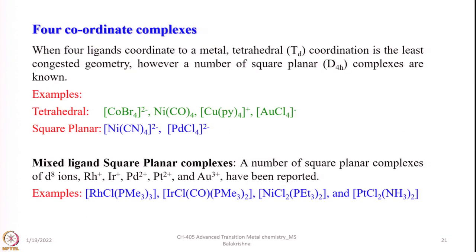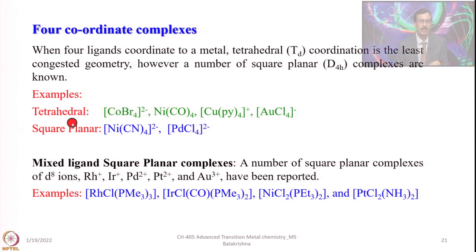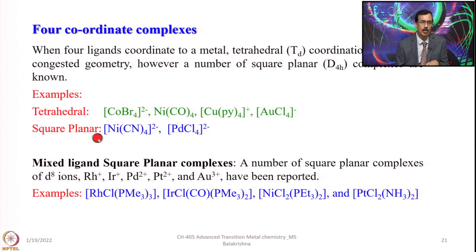4-coordinate complexes are very common. With coordination number 4, one can think of tetrahedral coordination or square planar complex formation. Examples of tetrahedral complexes include CoBr4²⁻, Ni(CO)4, tetrapyridyl copper(I), and AuCl4⁻. For square planar geometry, tetracyanonickelate and tetrachloropalladate are examples. These are all homoleptic complexes, but we also come across mixed ligand complexes with tetrahedral as well as square planar geometries.